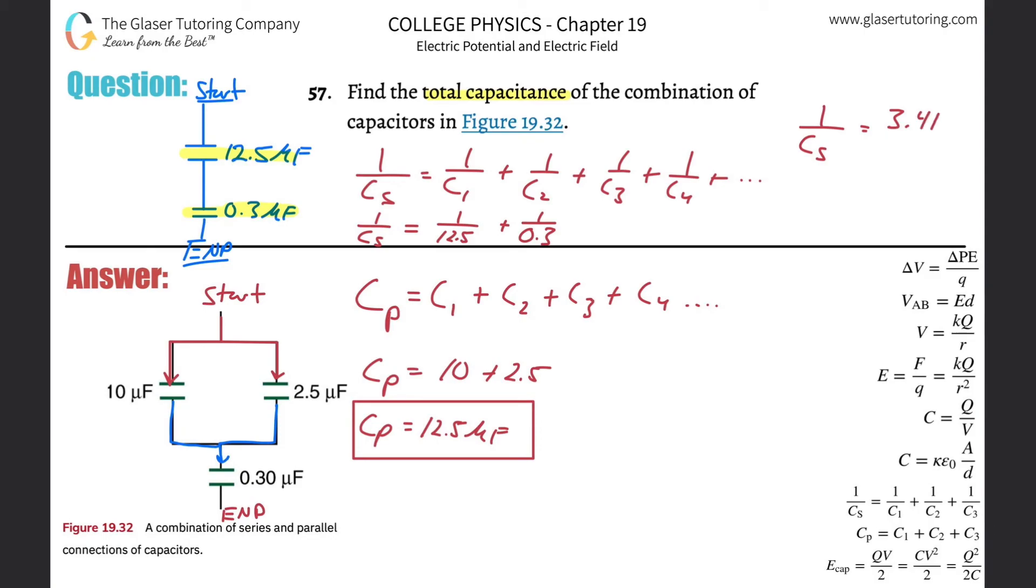And we get a value of 3.41, right? Three repeating. Now this is not the answer. This is the reciprocal of the answer. So in order to solve for the series capacitance, all you got to do is do a cross multiplication. Bring this out of the denominator, up into the numerator and on the right. Bring this value in the numerator and on the right, down into the denominator on the left. And voila, now you can plug this into the calculator. So just take the reciprocal of it.